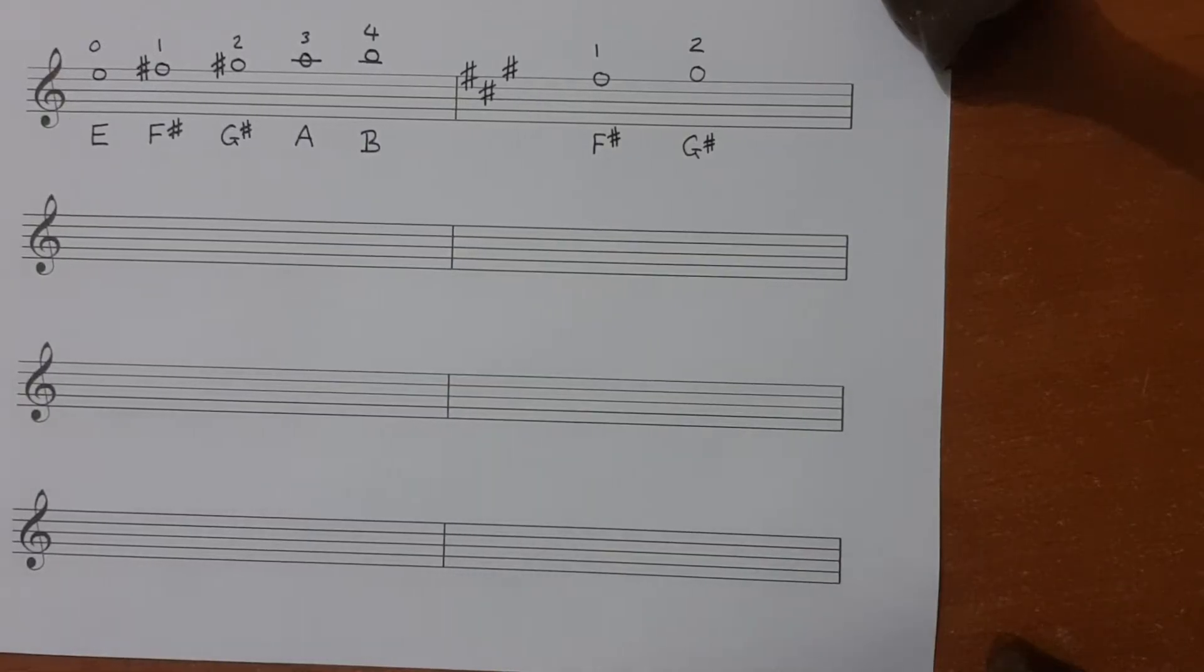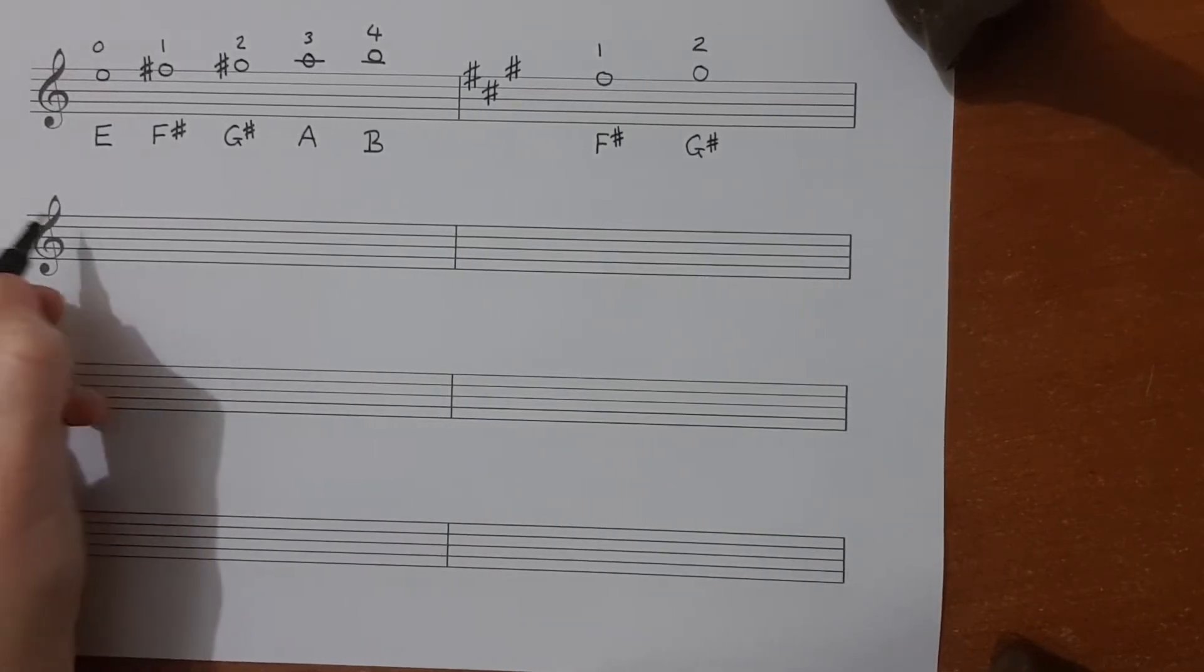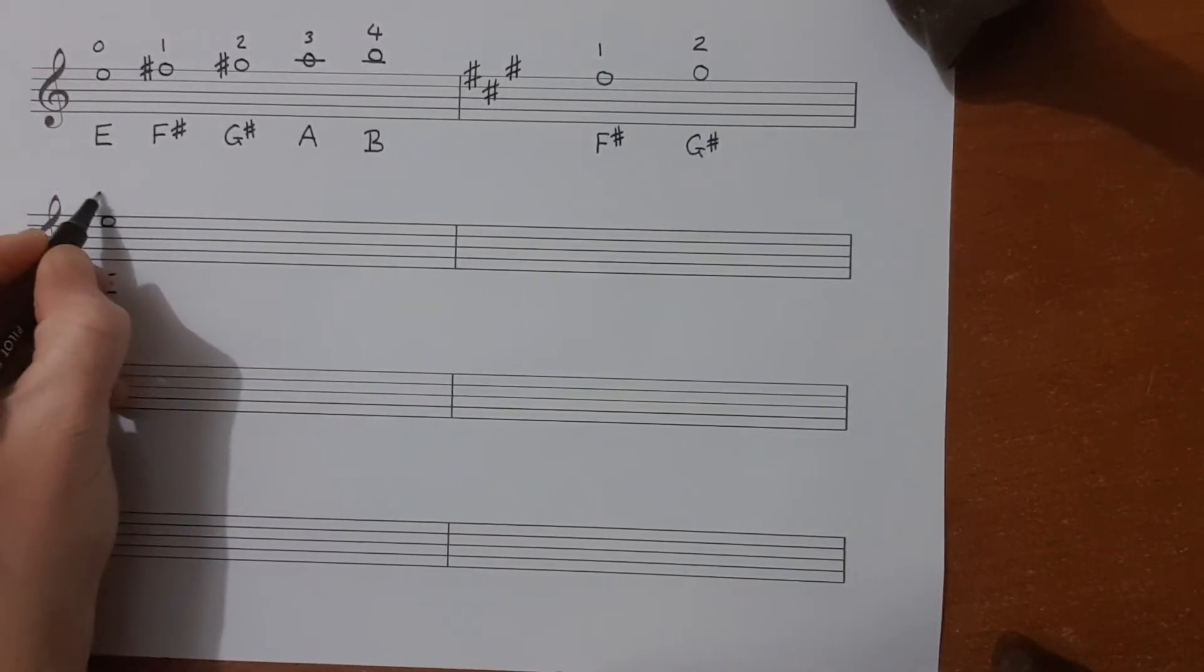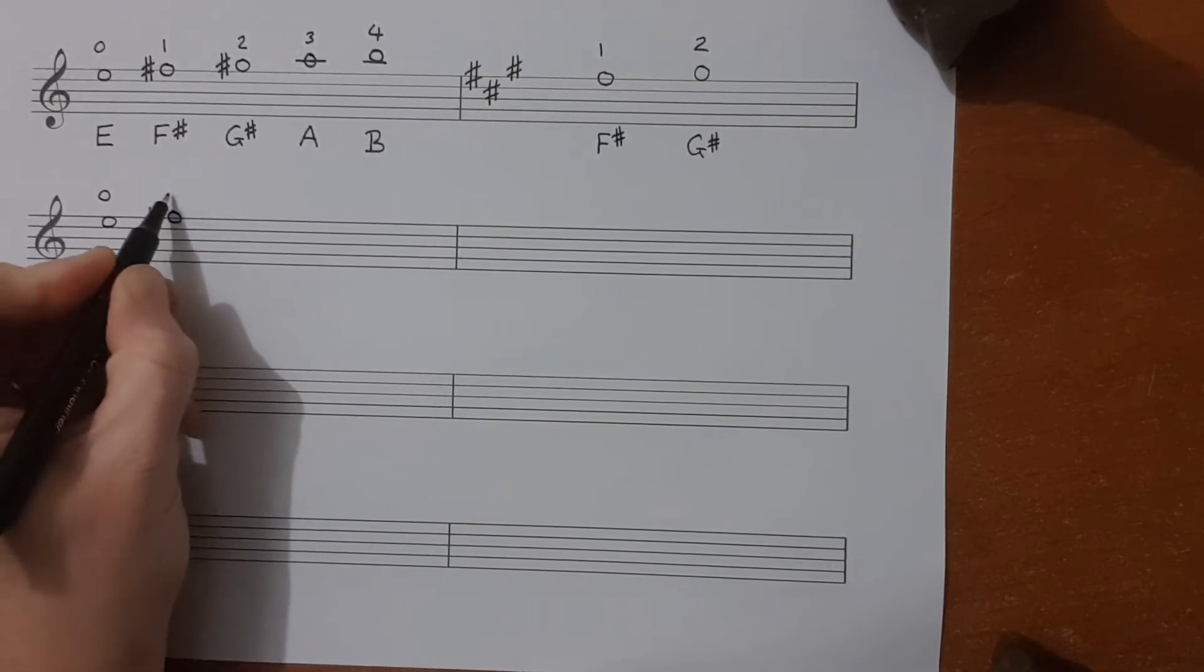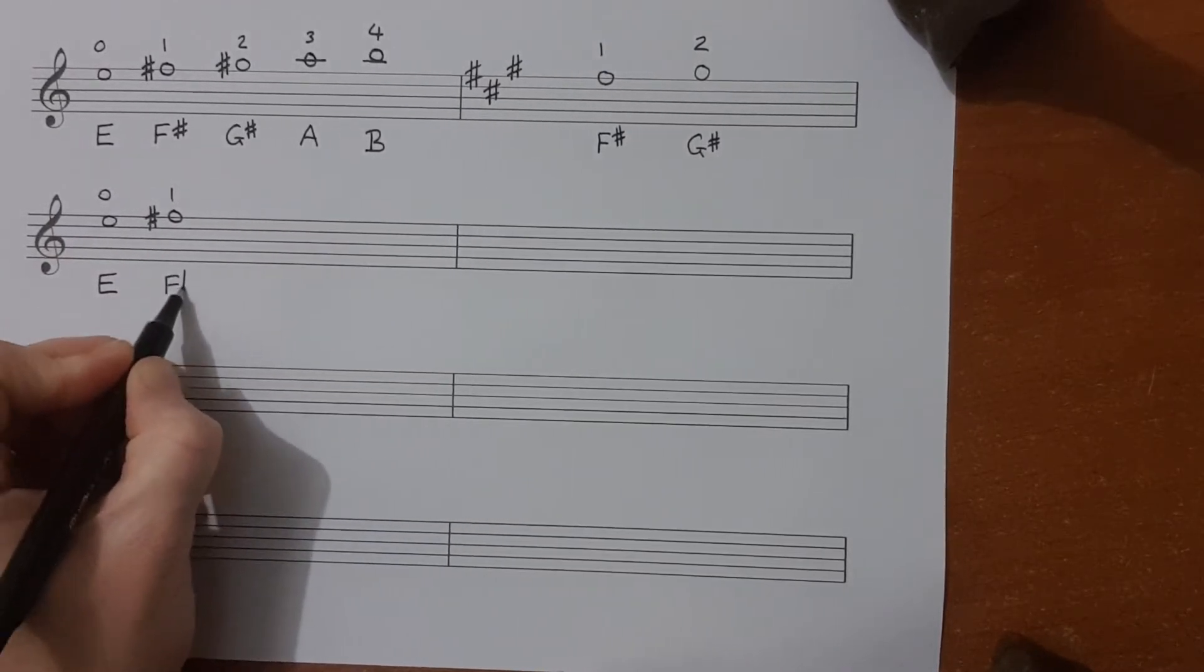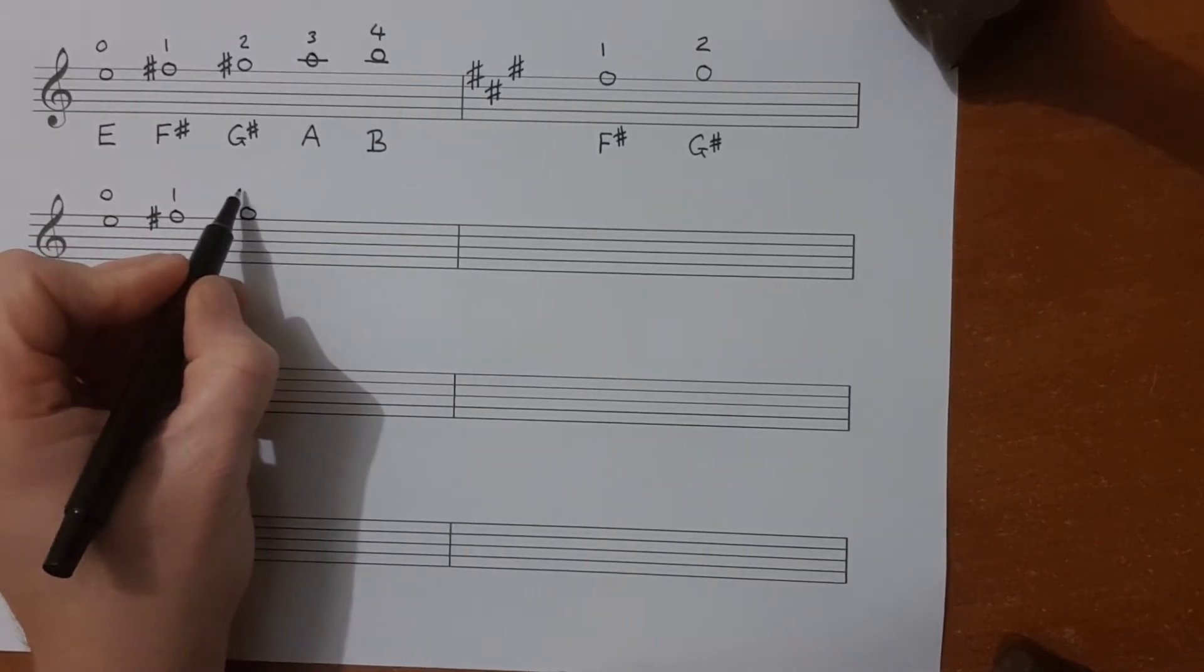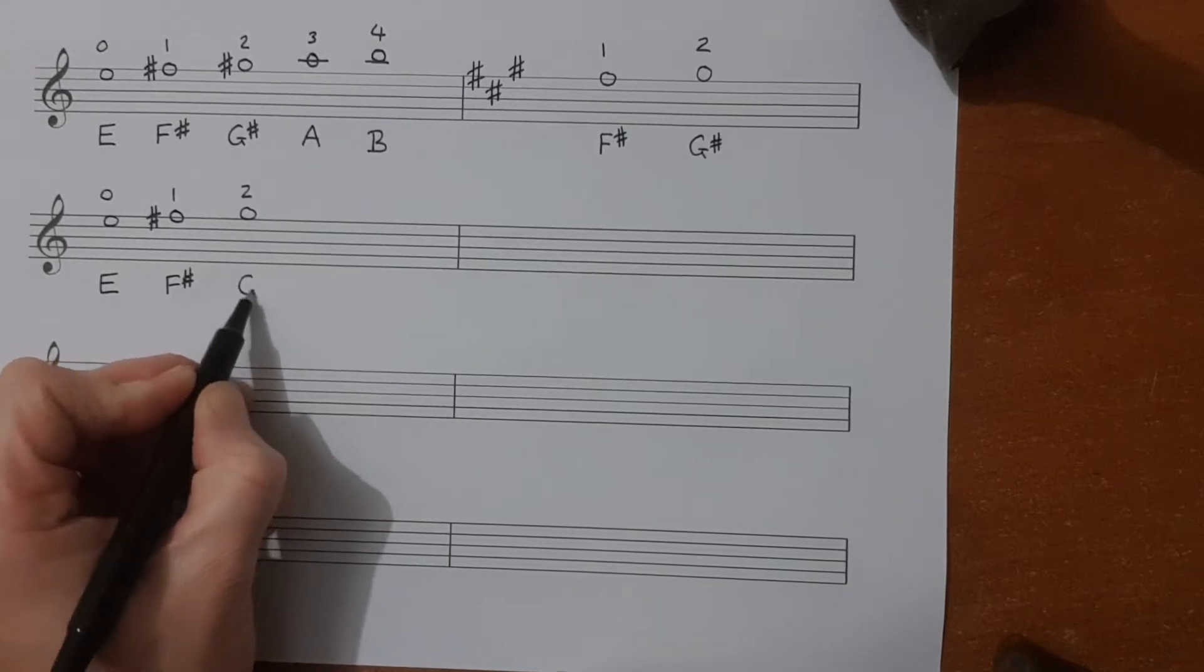Let's go and write it. The second finger frame, the only note that changes is the G sharp becomes a G. So we still have E. F sharp stays the same. And now instead of G sharp, we have G. And that means that our second finger is going to be placed close to our first finger.